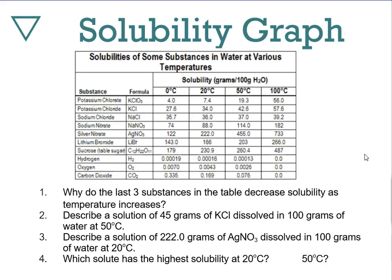Looking at ionic compounds across the table, you see a general trend: as temperature increases, solubility increases. That's not always true for all ionic compounds — we'll get more into that later. The same trend is true for sugar. If you're familiar with making sugary drinks from a packet, you know that heating the solution lets more sugar dissolve.